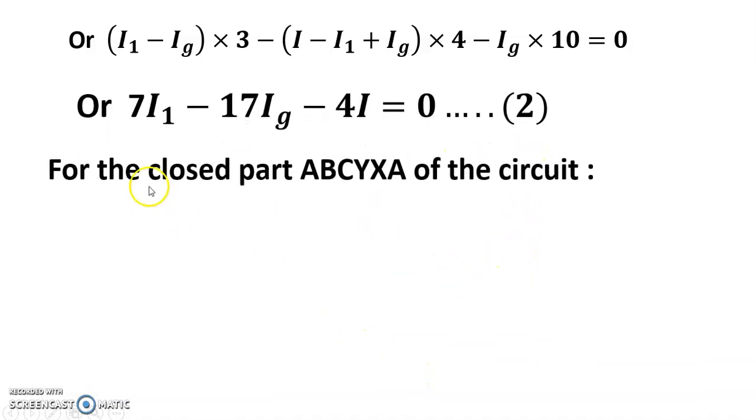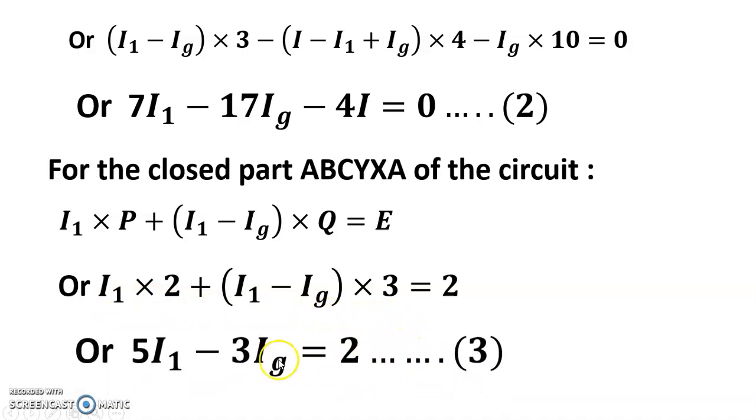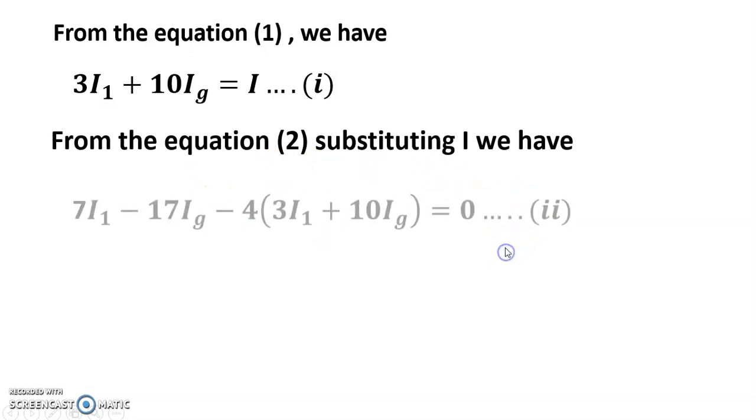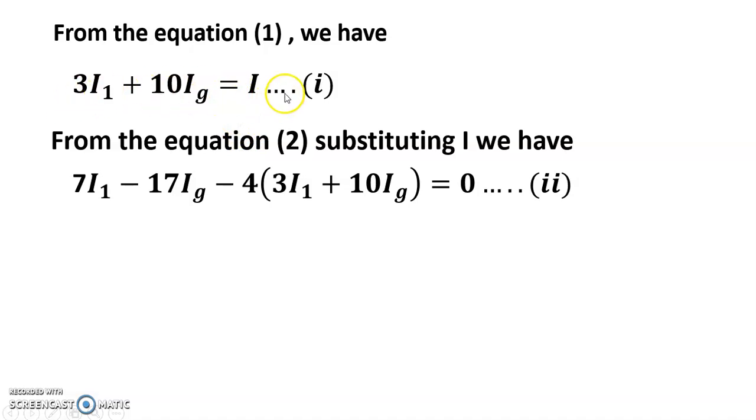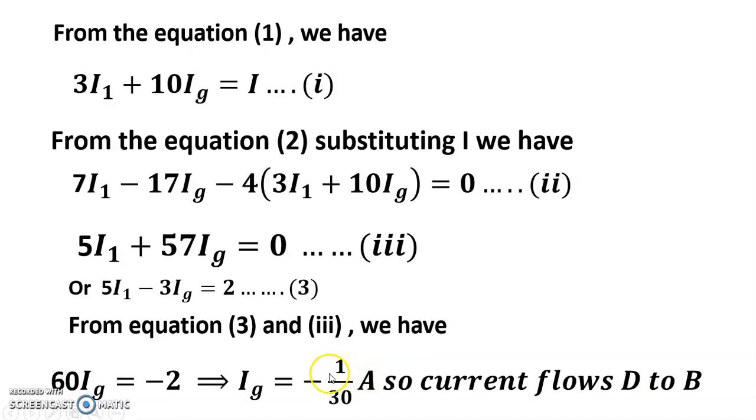I get this equation. And for the closed part ABCYXA of the circuit, we have I1 × P + IG × G - (I - I1) × R = 0. And we get this equation. And after simplifications, I get this value. From equation (1), we have 3I1 + 10IG = I. From equation (2), substituting I, we get this value. I value, from the equation I get value I, and I am putting the value of I in equation 2. So I get this value. And simplify, I get this value. And from equations (3) and (3), I get IG = -1/30 ampere. The minus sign means current flows D to B. The correct direction will be changed.